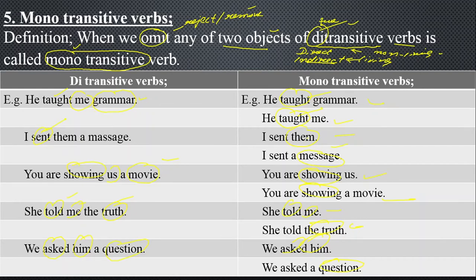So 'taught' is di-transitive and here 'taught' with one object is mono transitive. 'Send' is di-transitive with two objects, and 'sent' with one object is mono transitive. 'Showing' with two objects is di-transitive; with one object it is mono transitive. 'Told' with two objects — me and the truth — is di-transitive; with one it is mono transitive. 'Ask' with two objects — him and a question — is di-transitive; with one it is mono transitive.